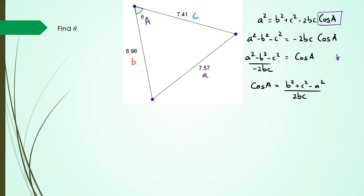So cos A = (a² - b² - c²) / (-2bc). That's cos A = (7.57² - 6.96² - 7.41²) divided by (-2 × 6.96 × 7.41).